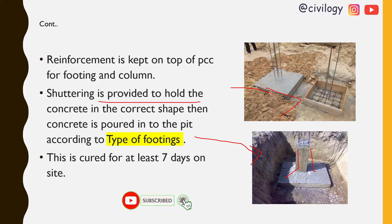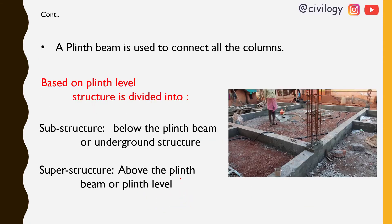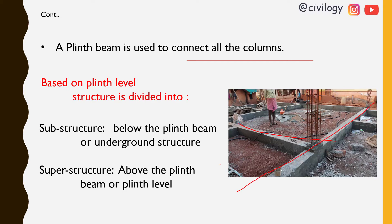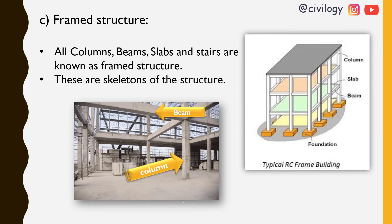A plinth beam is used to connect all the columns — you can see the plinth beams laid here. Based on the plinth level, the structure is divided into two types: the substructure, which is below the ground, and the superstructure, which is above the plinth.